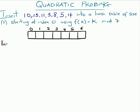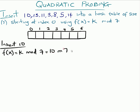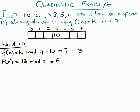The first one we're going to insert is 10. Using the hash function K mod 7: 10 mod 7 is 3, so we insert 10 at position 3. For the next one we have 13: 13 mod 7 is 6, so we keep 13 at position 6.